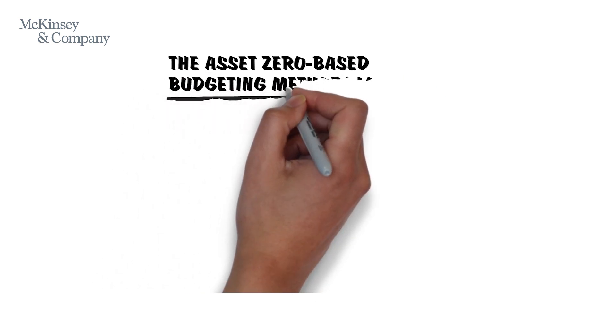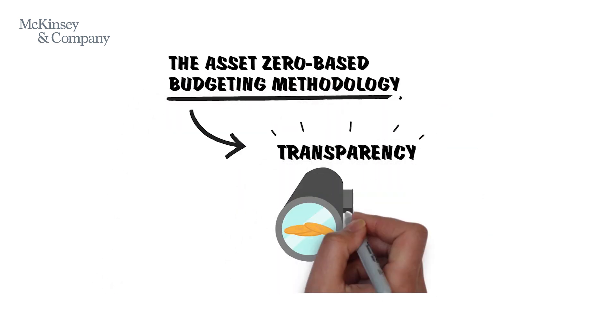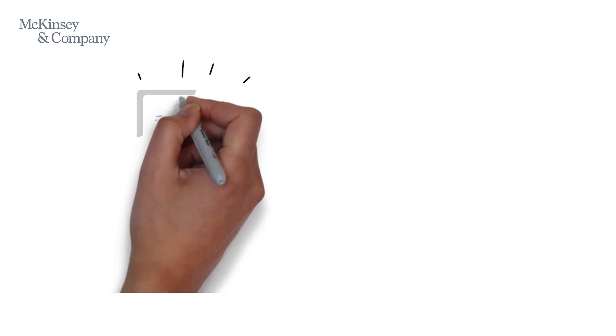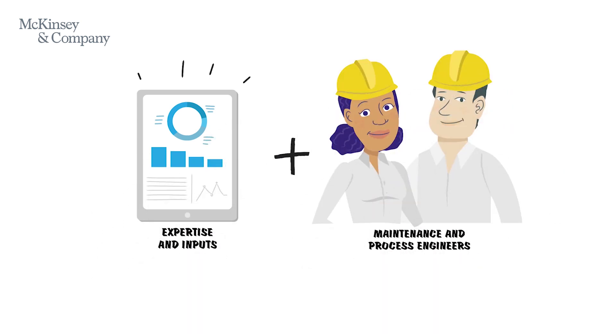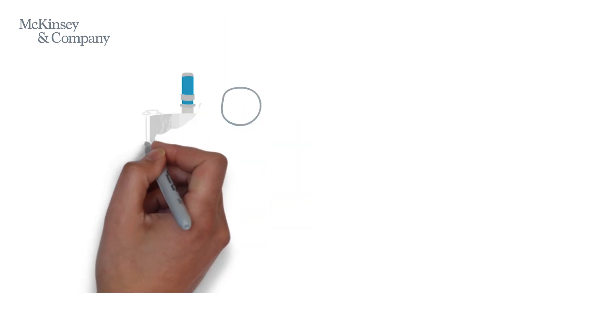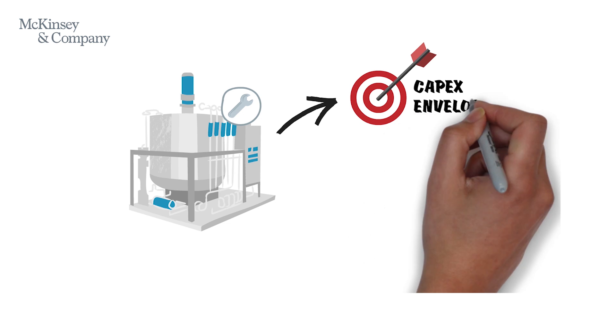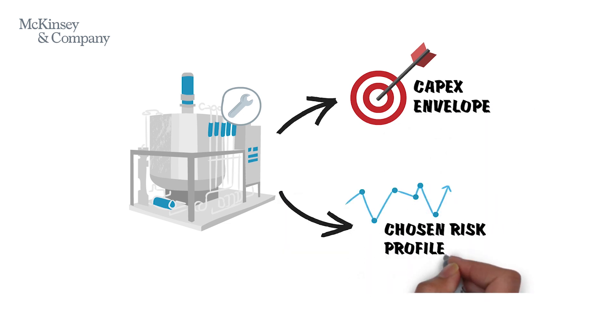The asset zero-based budgeting methodology helps create transparency on future asset spend by combining the expertise and inputs of plant maintenance and process engineers into a single model. It identifies what assets to prioritize given a target capex envelope and chosen risk profile.